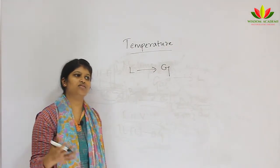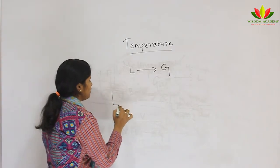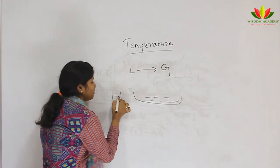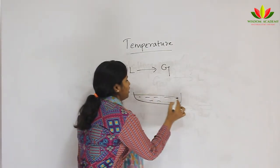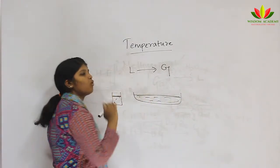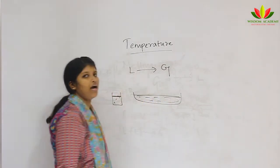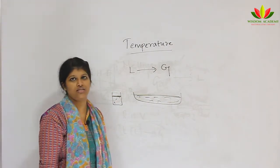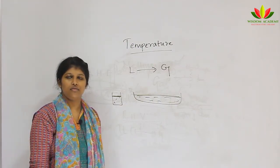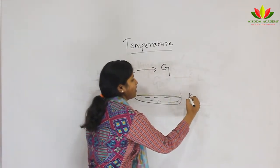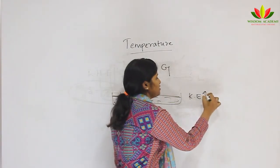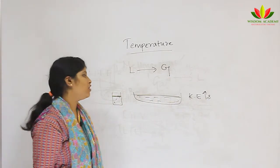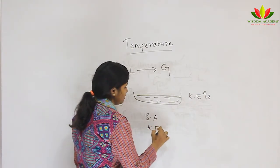In evaporation there are many factors which affect the process. The first is surface area — a vessel with more surface area will have higher evaporation compared to one with less surface area. The second factor is temperature: when temperature increases, kinetic energy increases, particles move more randomly, making it easier for liquid to convert into gas.